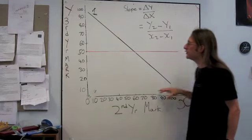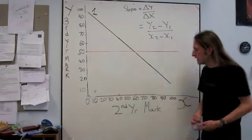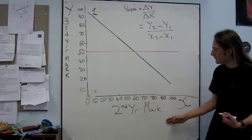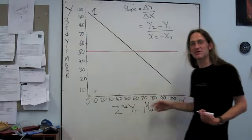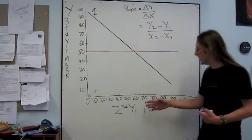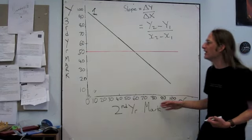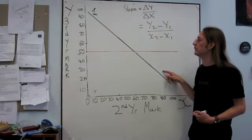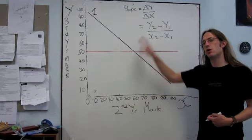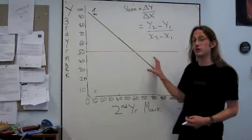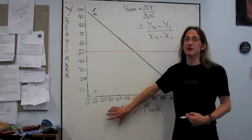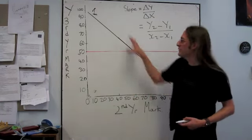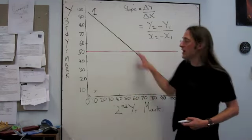So as x increases, y decreases. Now obviously in our example here with second year marks versus third year marks, it's very unlikely that we're going to find a situation where the higher the mark you get in your second year, the lower the mark you end up with in your third year. So this example doesn't really work for this function. You could, if you like, replace second year mark with time spent on Facebook, and then maybe this function would work out.